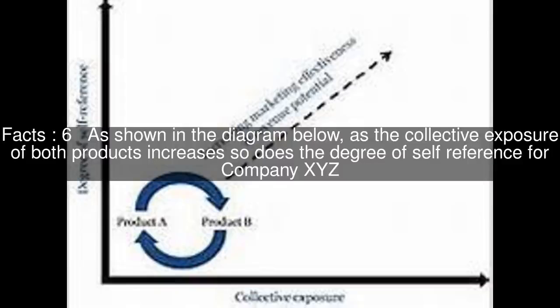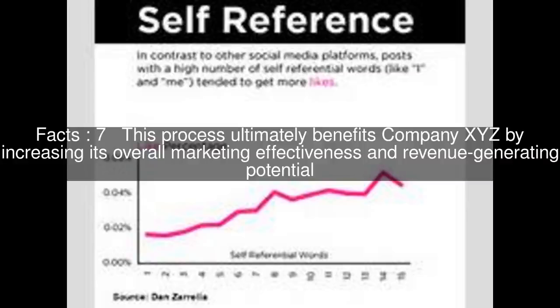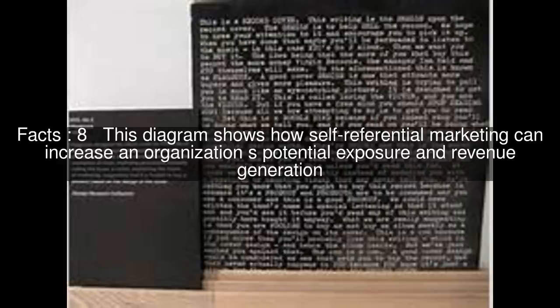As shown in the diagram below, as the collective exposure of both products increases, so does the degree of self-reference for Company XYZ. This process ultimately benefits Company XYZ by increasing its overall marketing effectiveness and revenue generating potential. This diagram shows how self-referential marketing can increase an organization's potential exposure and revenue generation.